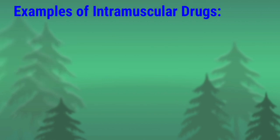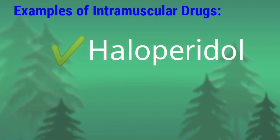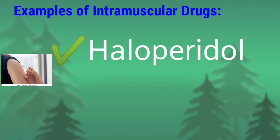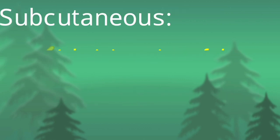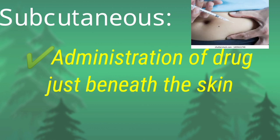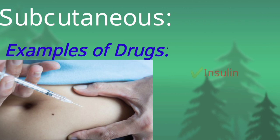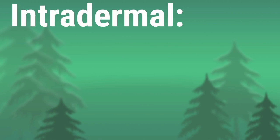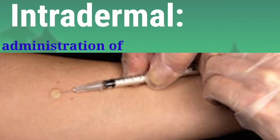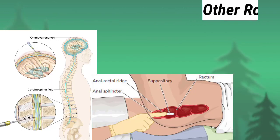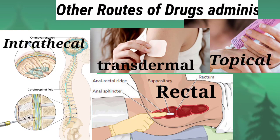Examples of intramuscular drugs are haloperidol and chloroquine. The subcutaneous route is the route in which the drug is administered just beneath the skin; the best examples are insulin and epinephrine. The intradermal route is the route in which the drug is administered just within the dermis of the skin. These are the pictures of the various routes.